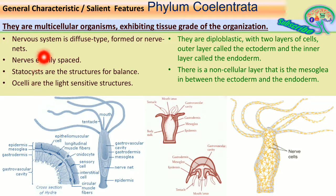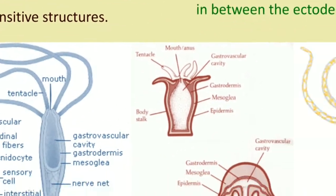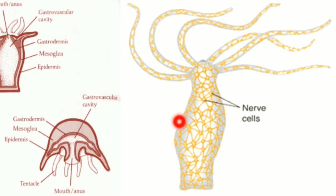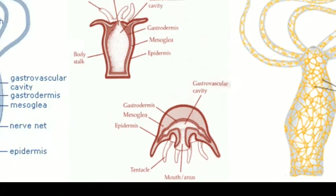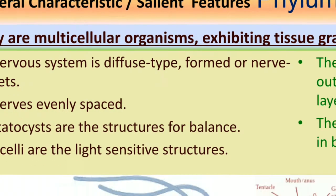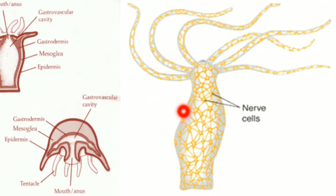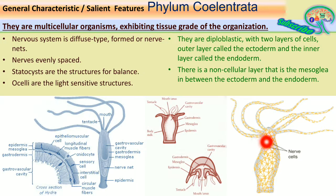The nervous system is a diffuse system formed by nerve nets. In the hydra diagram you can see nodes - circular or polygonal structures - which are nerve cells connected to each other forming a nerve net. These nodes are evenly spaced at ideal distances from each other, so the functioning of the nerve cells is very accurate.